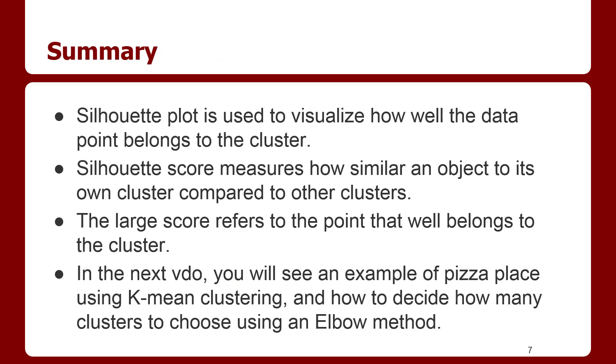In summary, silhouette plot is used to visualize how well the data point belongs to the cluster. The silhouette score measures how similar an object to its own cluster compared to other clusters. The large score refers to the point that well belongs to the cluster. In the next video, you will see an example of pizza place using k-mean clustering and how to decide how many clusters to choose using an elbow method.